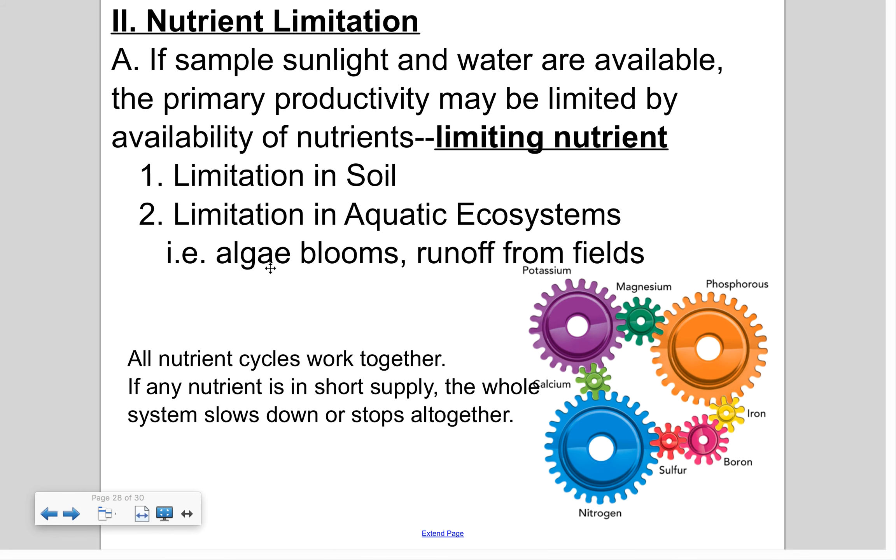All right, the last thing I want to talk about is nutrient limitation. If ample sunlight as well as water are available, then the primary productivity of an ecosystem can be limited by the availability of nutrients. And we call this a limiting nutrient. So that means that if an essential nutrient is in short supply, then that primary productivity is limited. So all of these nutrient cycles work together like gears or cogs.